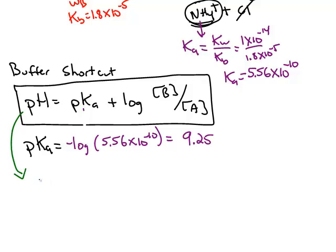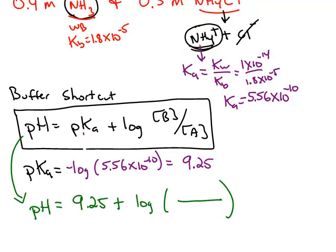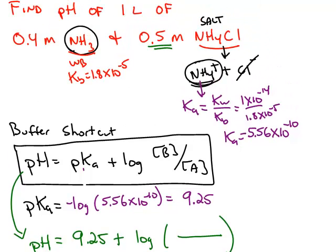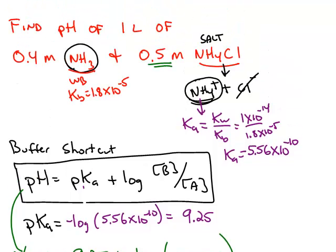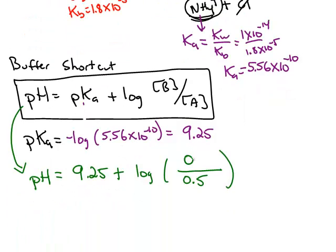So now in this Henderson-Hasselbalch formula, we want to find the pH of the buffer. The pKa is 9.25. And then the important thing in this formula is being able to identify the acid and the base correctly. The acid molarity is 0.5, and that goes in the denominator. The base molarity 0.4 goes in the numerator. So depending on whether you have more acid or more base in your buffer, the pH will either increase or decrease from the pKa value. In this case, we have more acid, and that is going to decrease our pH from our pKa. The pH is 9.15.